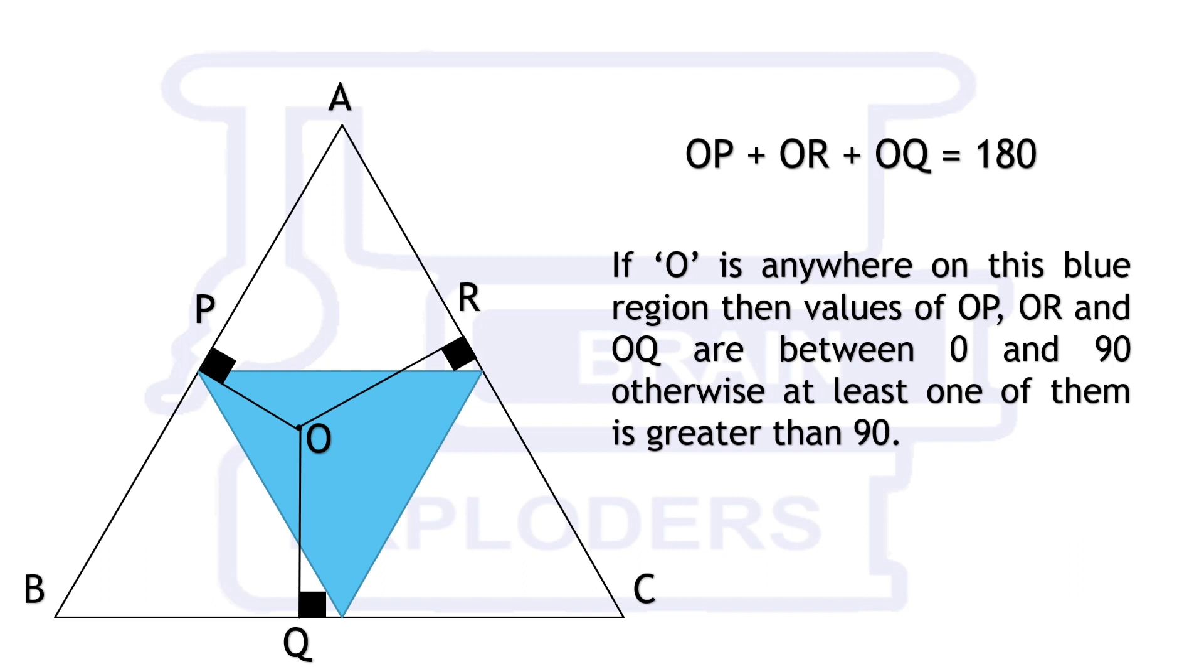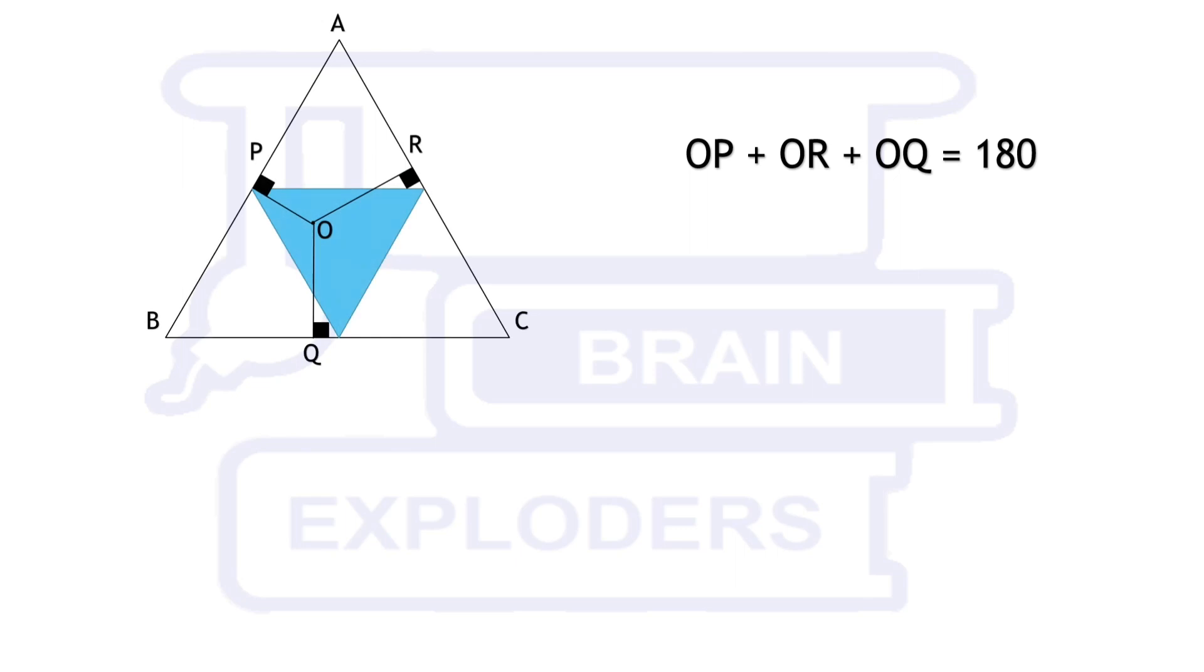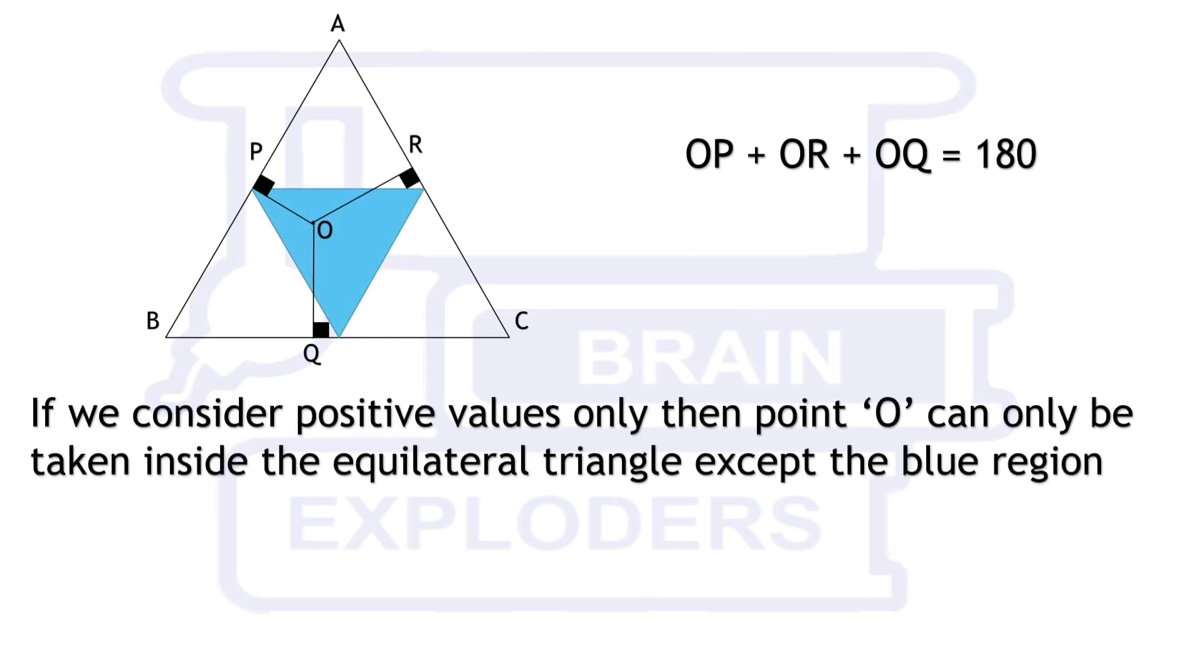If we consider positive values only, then point O can be taken inside the equilateral triangle except the blue region. So the sample space is equal to 4 times blue region. Therefore, probability that any one of the number is greater than 90 becomes 3 by 4.